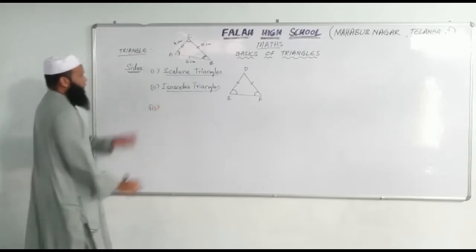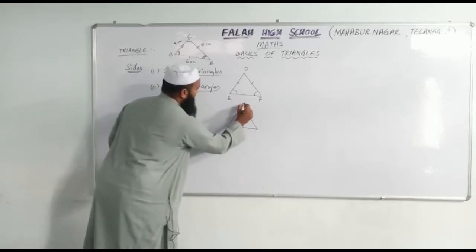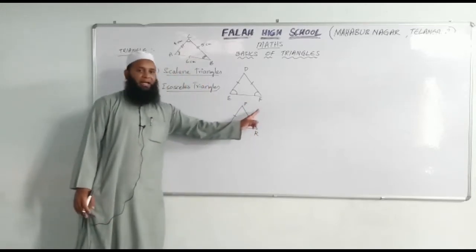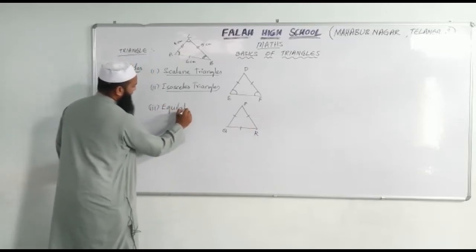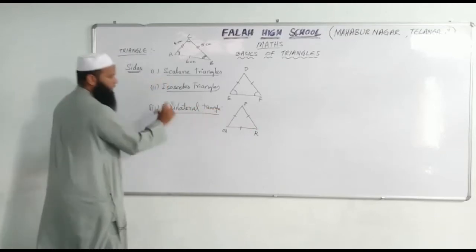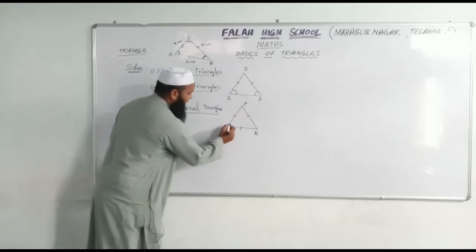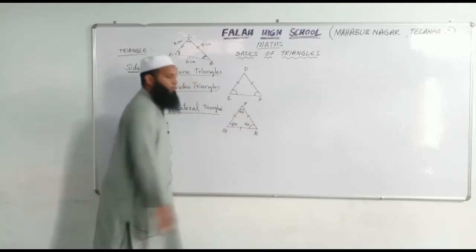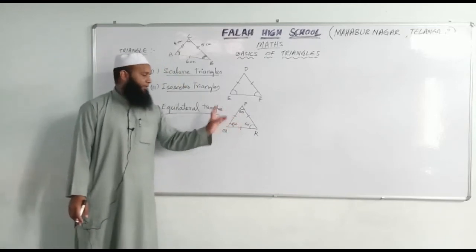Now third type depending upon sides. I have drawn a triangle here — suppose this triangle is P, Q, R where I have taken all three sides as equal. If three sides of a triangle are equal, then such triangles are called as equilateral triangles. One more property of this triangle is all the angles will be equal, equal to 60 degrees each. Because the sum of three angles is 180 degrees, that is why three angles should be 60, 60 and 60.